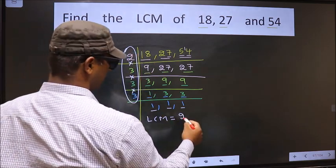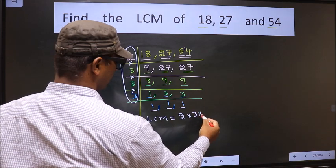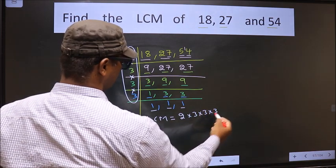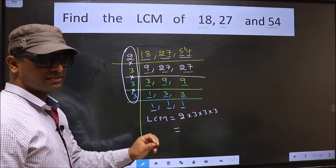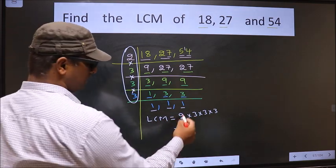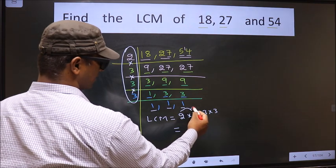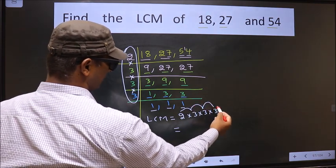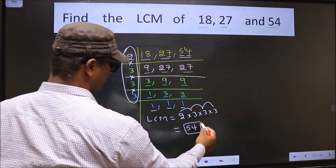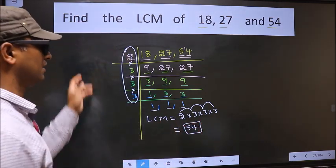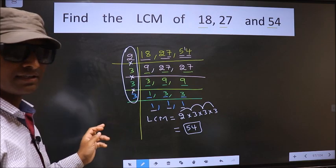That is 2 into 3 into 3 into 3. Now let us multiply these numbers. That is 2 into 3 is 6, 6 into 3 is 18, 18 into 3 is 54. 54 is our LCM. Am I clear?